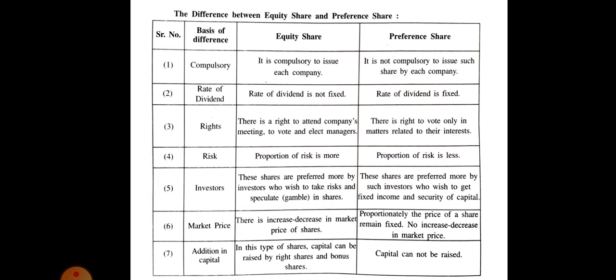Sixth: market price — in equity shares, there is increase and decrease in market price; in preference shares, the price remains mostly fixed and does not increase or decrease much. Seventh: addition in capital — equity shareholders can get additional capital through right shares and bonus shares; but in preference shares, there is no addition in capital. So these were the differences between equity shares and preference shares.